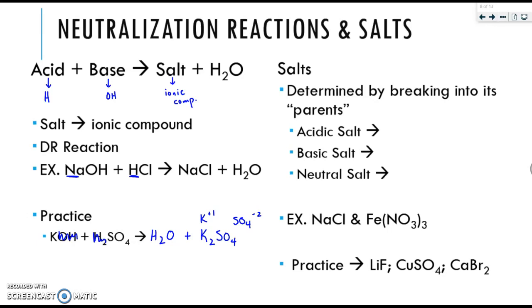Something connected to neutralization is salts. We need to figure out the type of salt that exists when things interact with each other. We can determine the type of salt by breaking them into their parents. Let's go through the rest of these notes here, and then we'll do a few examples. If it is an acidic salt, its parents will be a strong acid and a weak base. If it's a basic salt, it'll be a strong base and a weak acid. And if it's a neutral salt, it'll be a strong acid as well as a strong base.